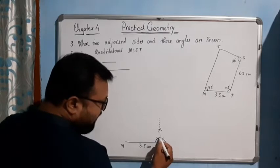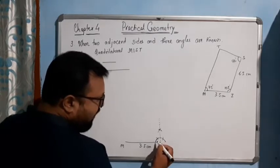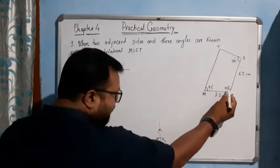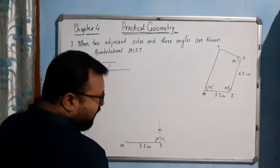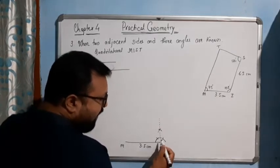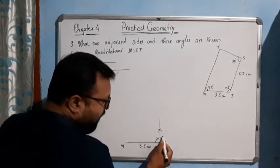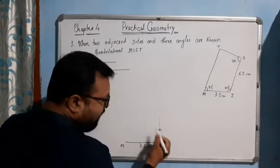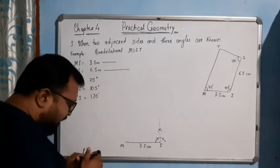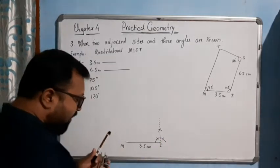So 60 plus 30 gives you 90 degrees. How much more do you need to make 105? 15 degrees. This is 30 degrees — if we divide this angle into half, we will get 15 degrees. So it will be 105.